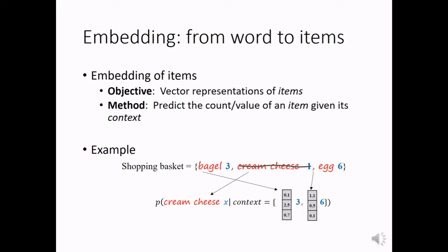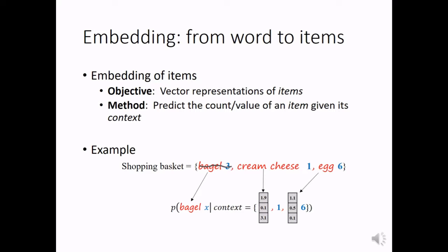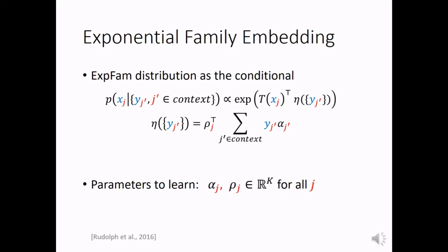Or, we take out a bagel, use cream cheese and egg as the context, and use their vector representations to predict the count of bagel. This idea is formally formulated as exponential family embedding.